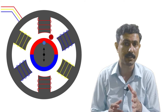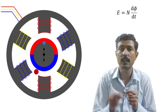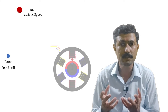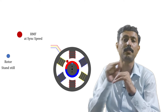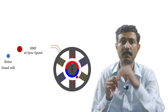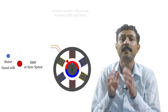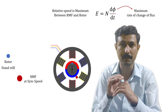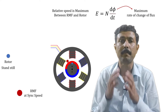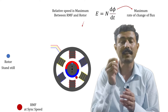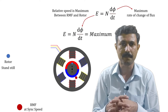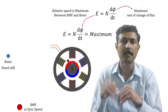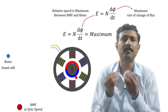The equation for induced EMF is e = N × dΦ/dt. Initially, the rate of change of flux is maximum because the rotor is standstill and the RMF is rotating at synchronous speed. The relative speed between the rotor and the rotating magnetic field is maximum, which means we get the maximum rate of change of flux. When the rate of change of flux is maximum, the induced EMF in the rotor is also maximum.